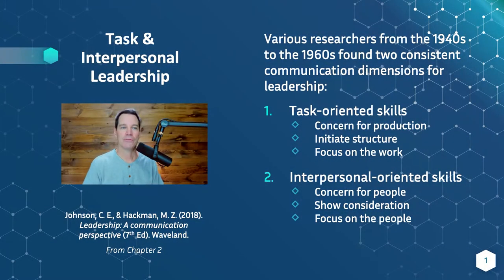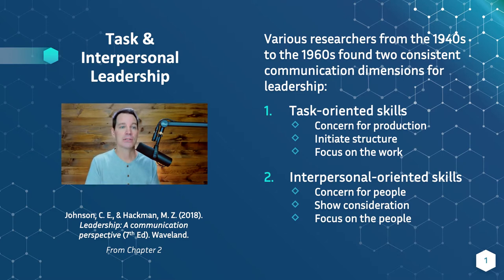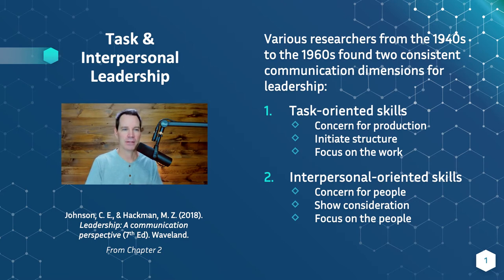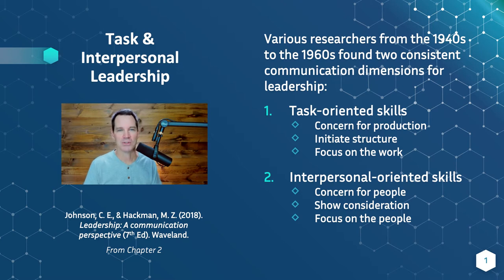Various researchers from the 1940s up through the 1960s found two consistent communication dimensions for leadership. When they studied leadership, they noticed that leaders had task-oriented skills like concern for production — they would initiate structure and focus on the work. They also noticed that a lot of leaders had an interpersonal-oriented skill set, where they were concerned for people, showing consideration and focused on people. Those are the two key dimensions.